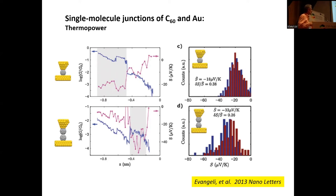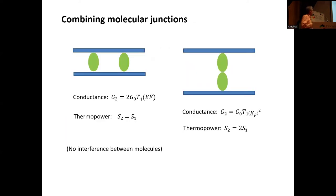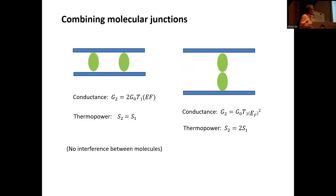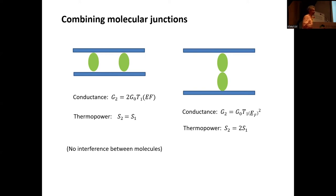For two C60, the Seebeck coefficient is almost double — around minus 50 microvolts per kelvin — which is natural because while the conductance is the square of the single transmission (much lower), the Seebeck coefficient adds. So when you have larger molecules, you typically get larger thermal power.